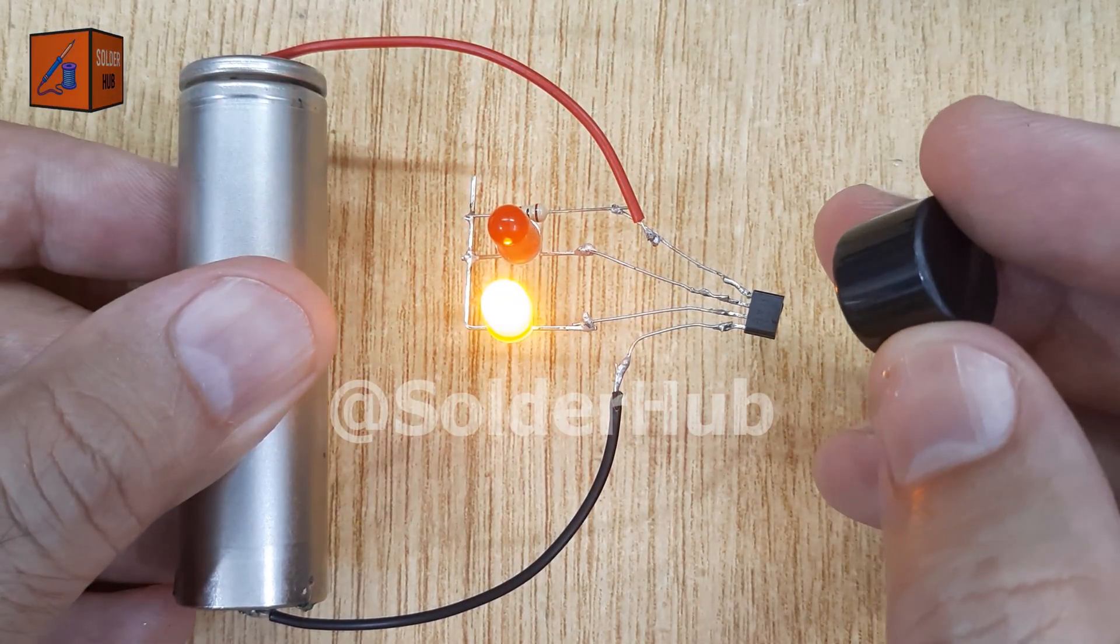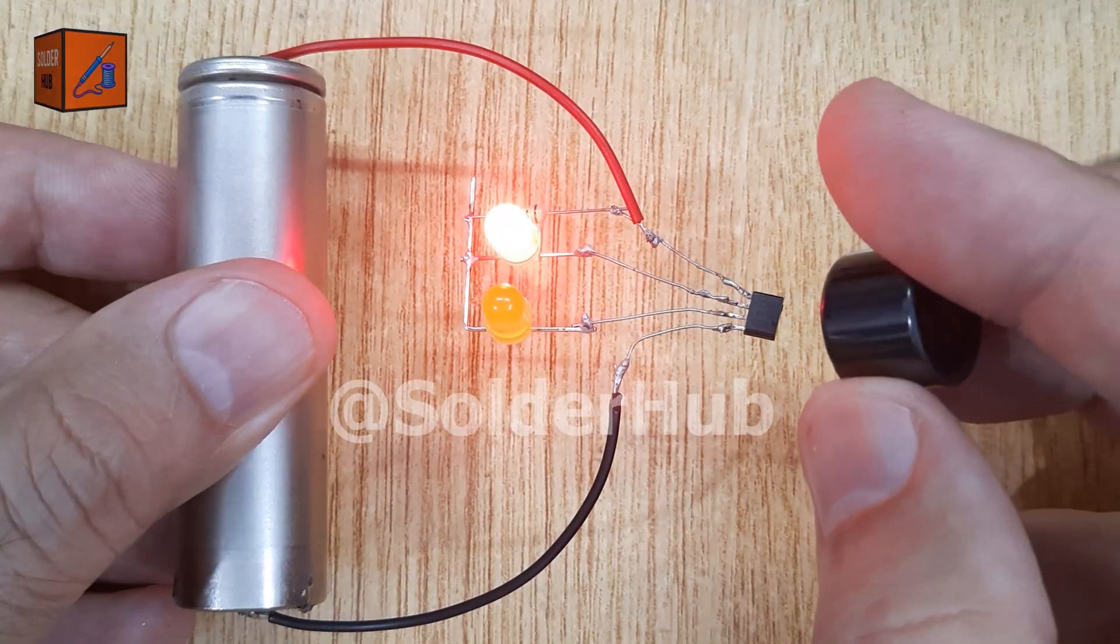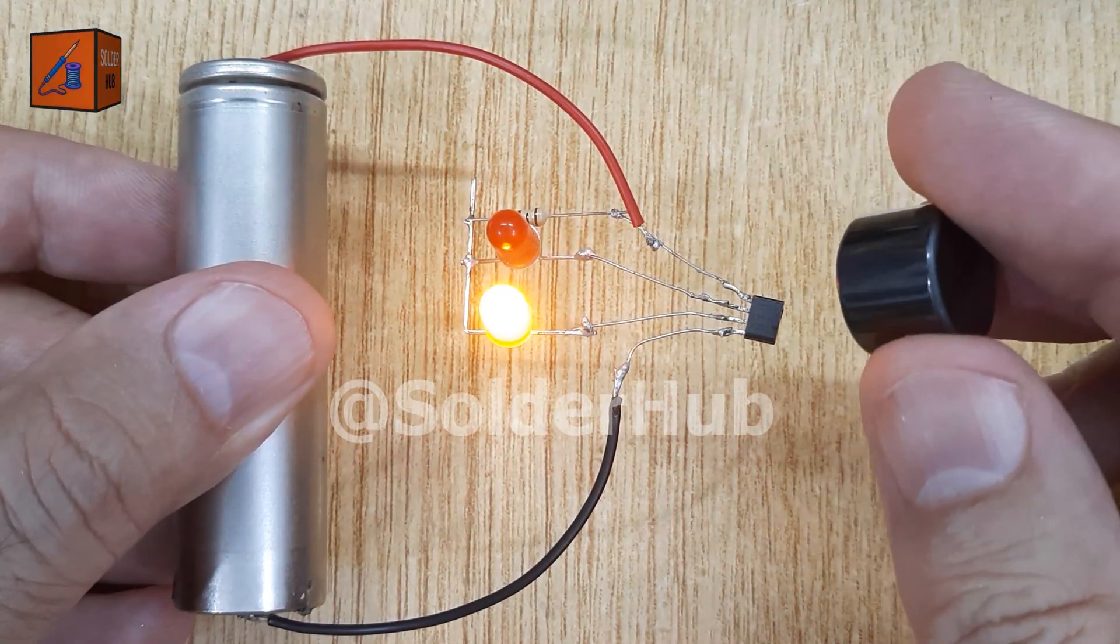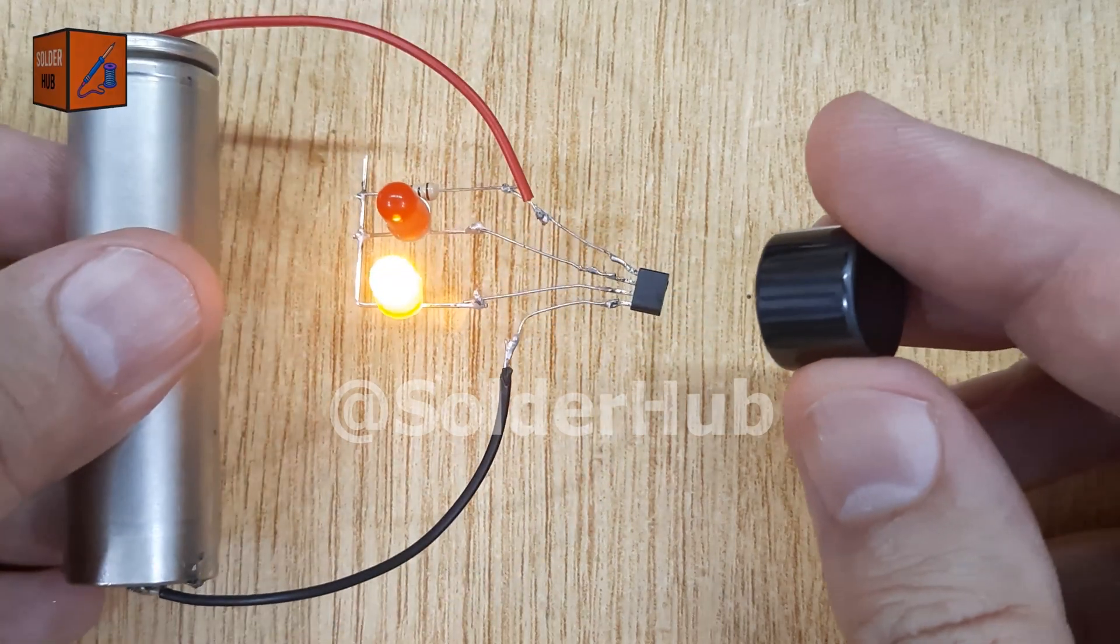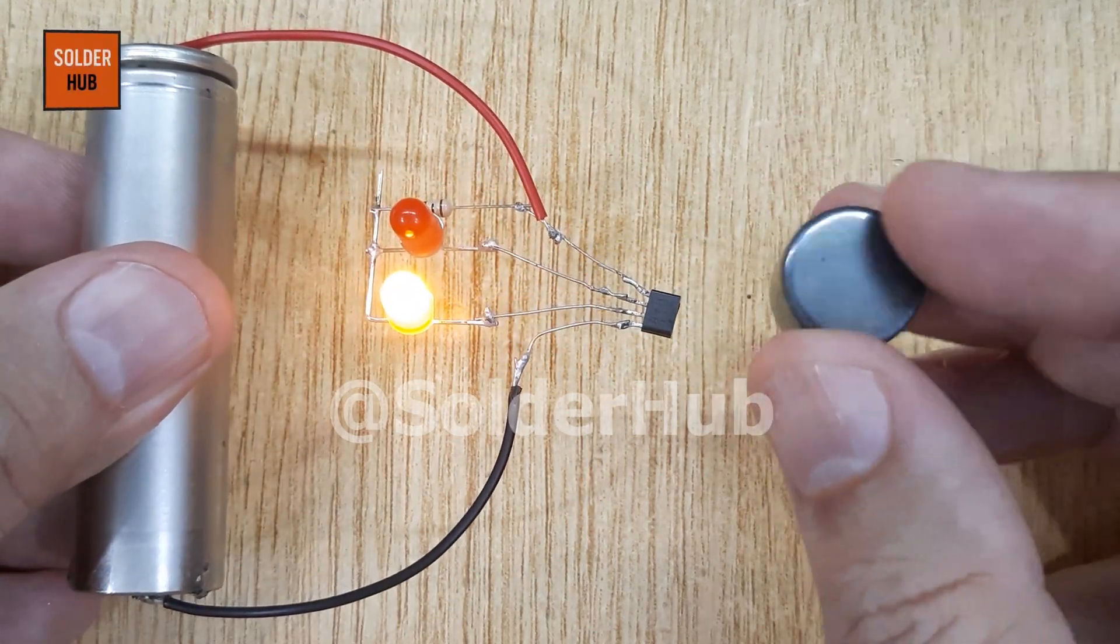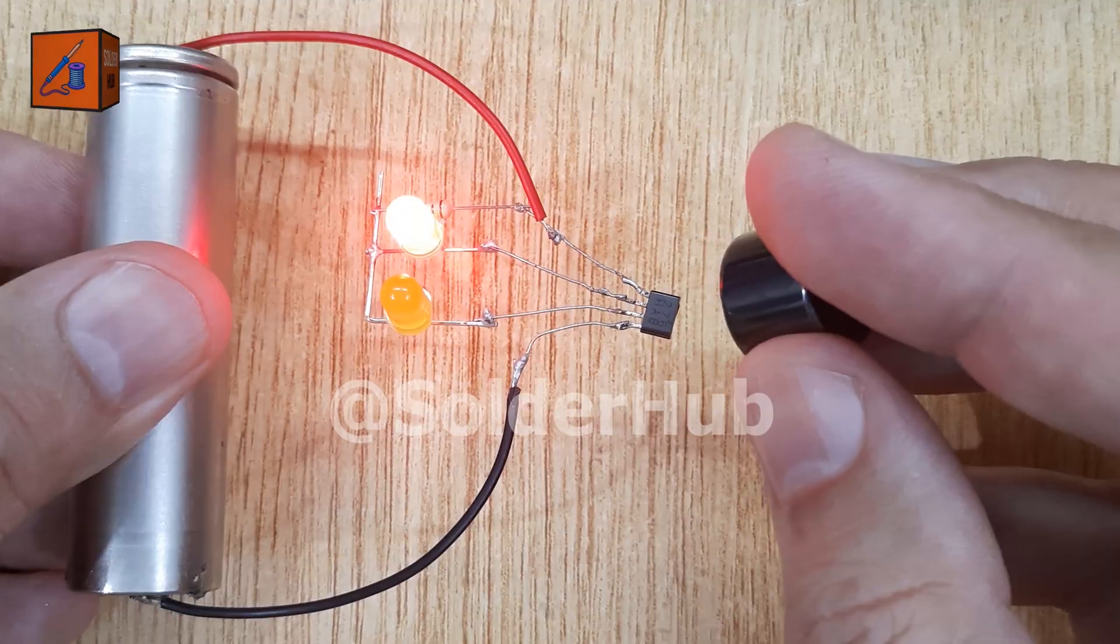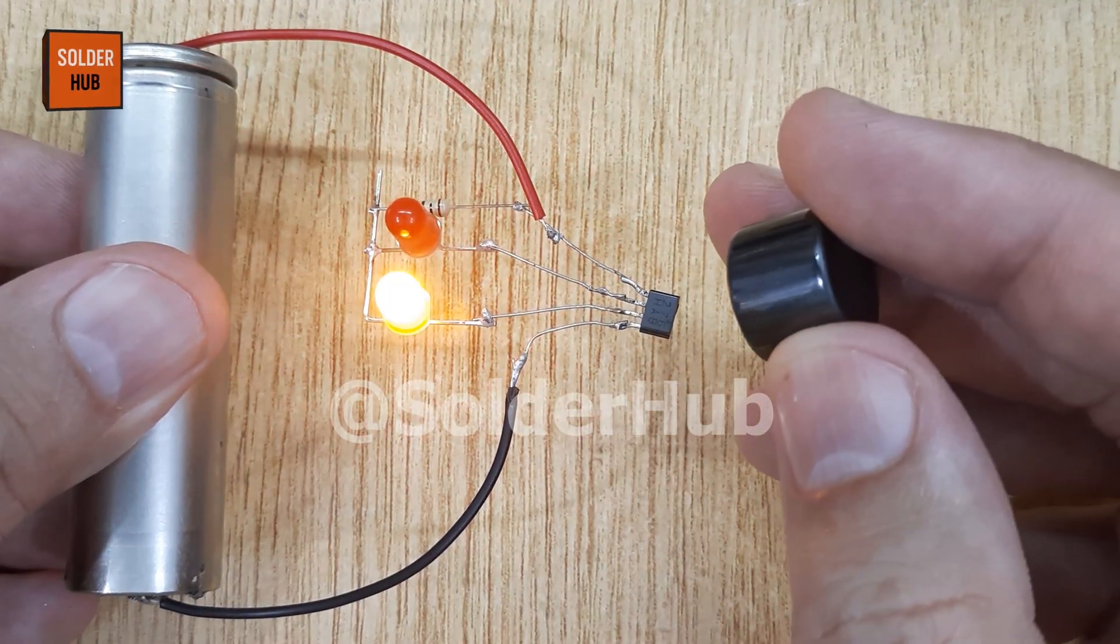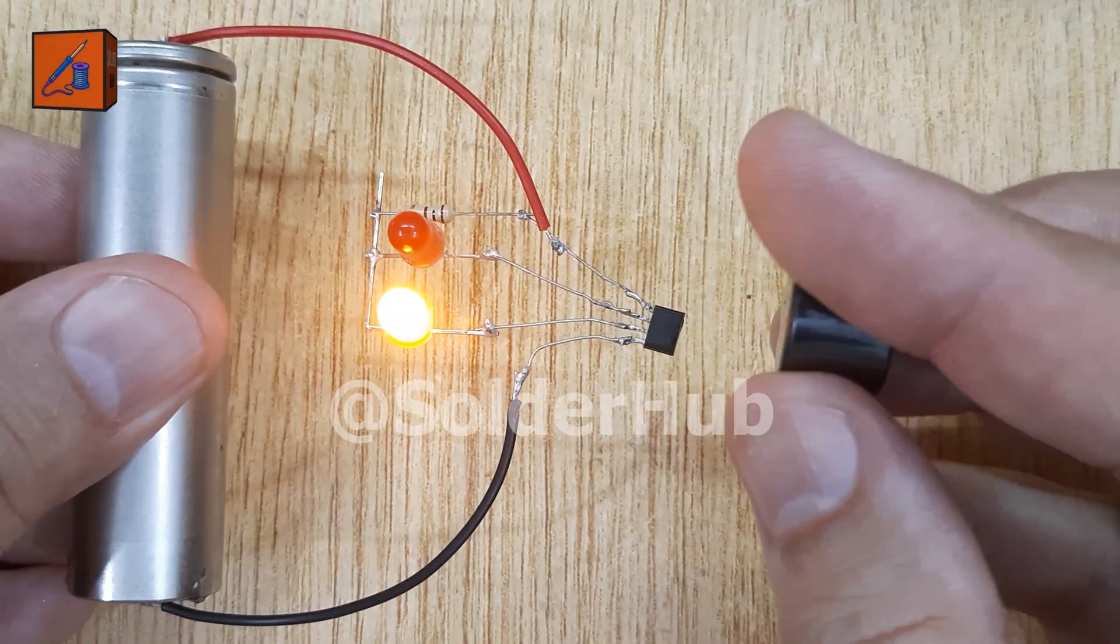The hall effect sensor works on the principle of magnetic field detection. Inside it, a small element produces voltage when exposed to a magnetic field. Depending on the polarity of the magnet, one of the two output pins is activated. This allows either the yellow LED or the red LED to glow. In simple words, one magnet with two different sides can control two LEDs.